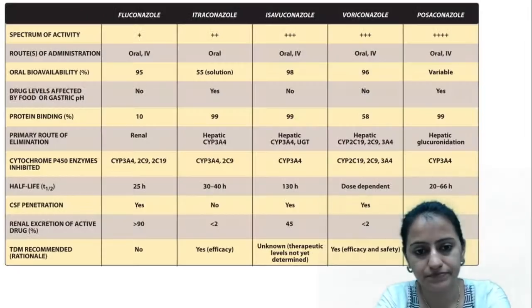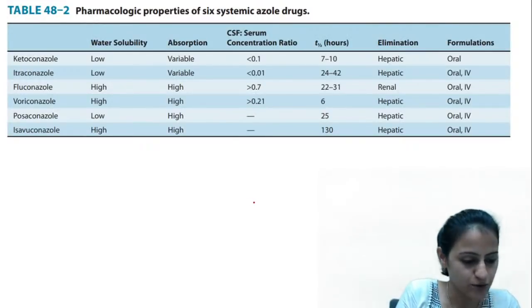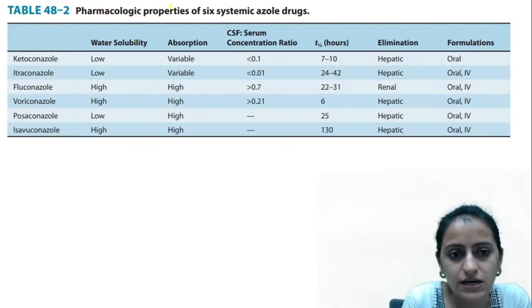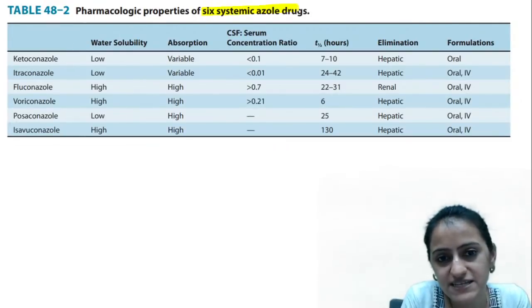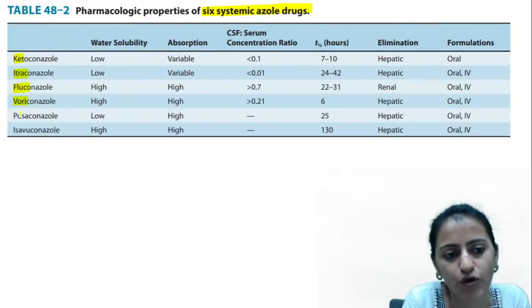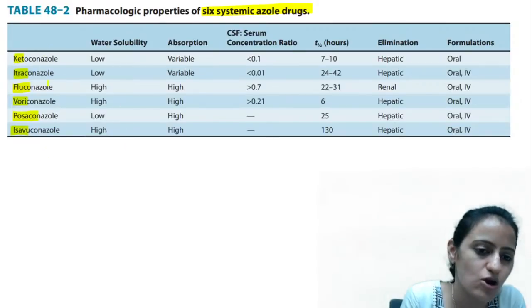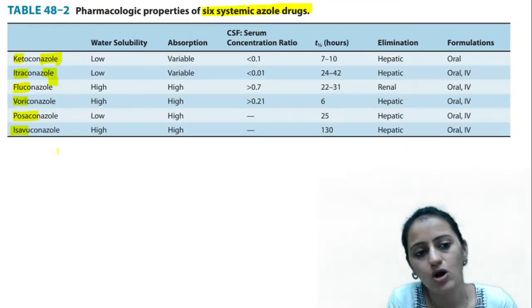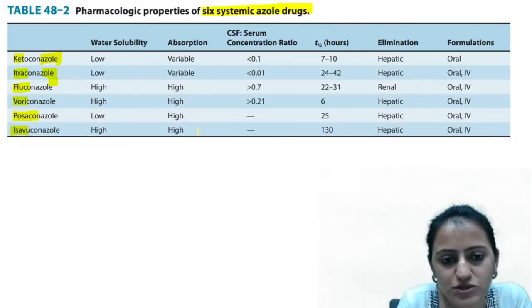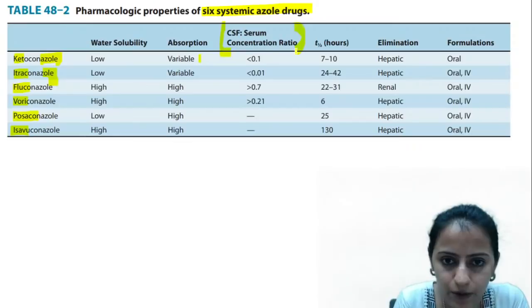Let us look at the azoles group — pharmacological properties of the 6 systemic azole drugs: ketoconazole, itraconazole, fluconazole, voriconazole, posaconazole, and isavuconazole. The most important point to remember: maximum CSF-to-serum concentration ratio is with voriconazole. If voriconazole is not in the option, go for fluconazole.